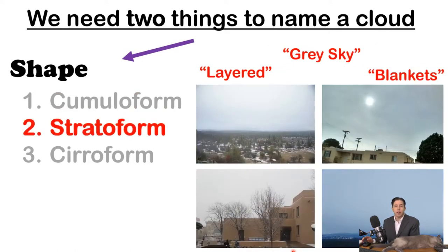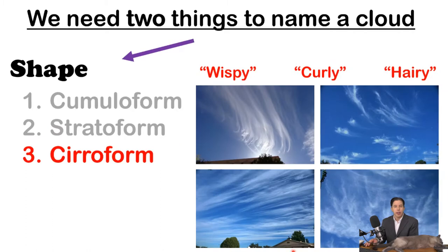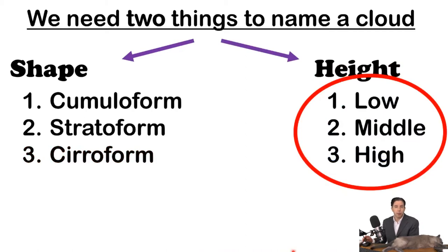Stratiform clouds are far more boring. They are more like a solid blanket across the sky — you can't really see the edge. They typically form a solid gray sky. Then ciriform clouds have all kinds of interesting shapes. They're kind of these wispy, curly, hairy clouds that are high up in the atmosphere. Those are our three possible shapes.